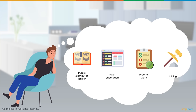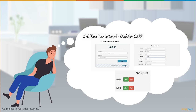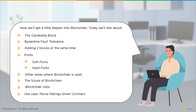We also covered how to implement blockchain in a banking system — specifically a KYC-based blockchain decentralized app that allows a KYC done by one bank to be leveraged by another, so customers don't have to repeat KYC at every bank they transact with. Now we'll go deeper into blockchain, covering candidate blocks, Byzantine fault tolerance, handling simultaneous block additions, the concept of forking — soft forks and hard forks — other blockchain use areas, the future of blockchain, and upcoming blockchain job profiles.